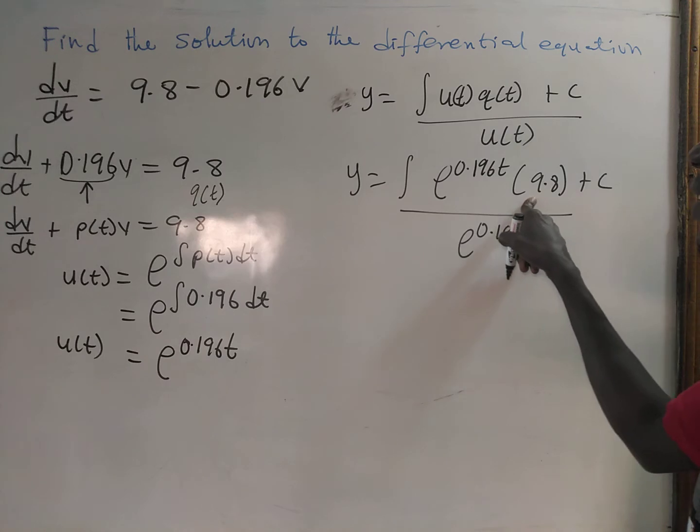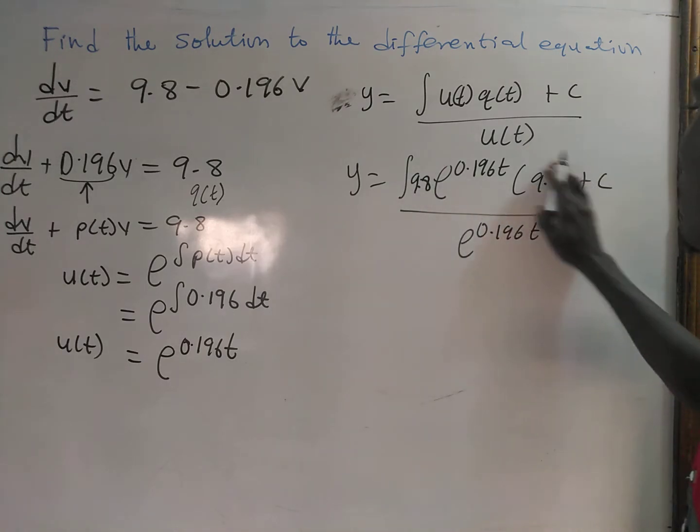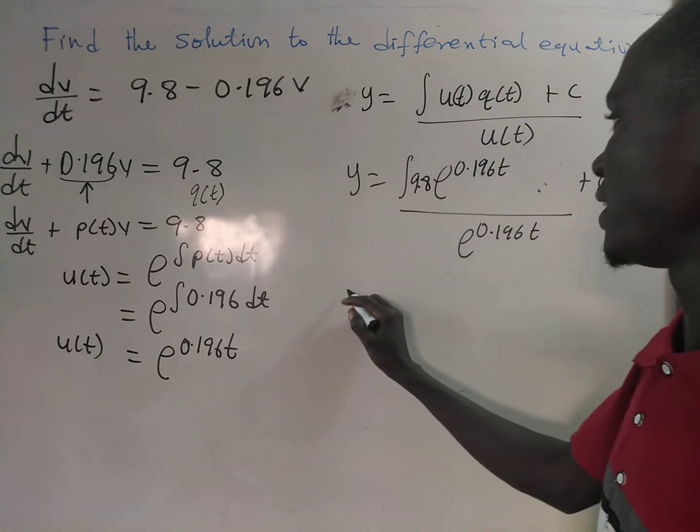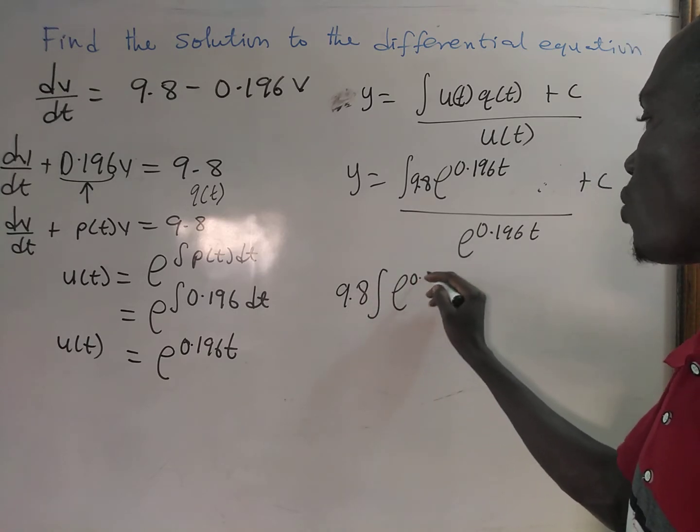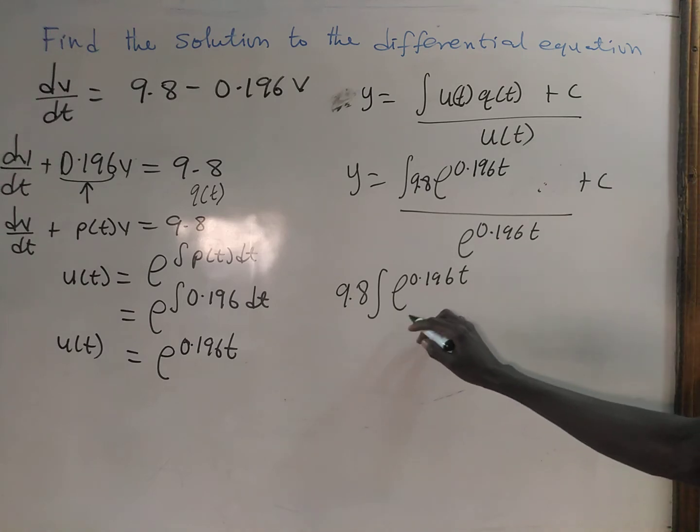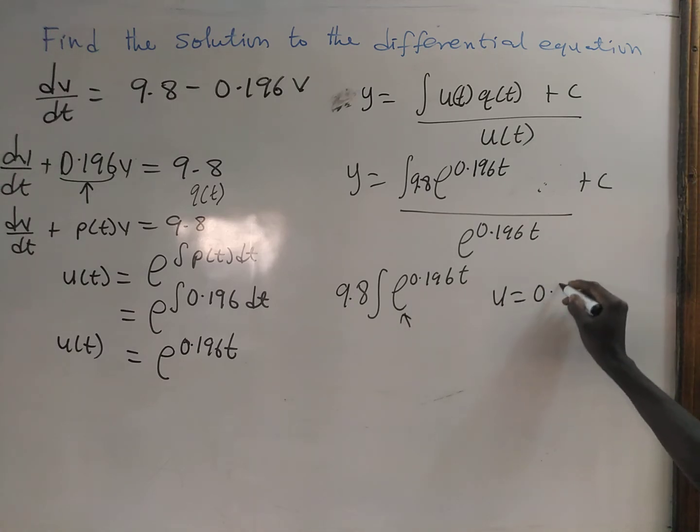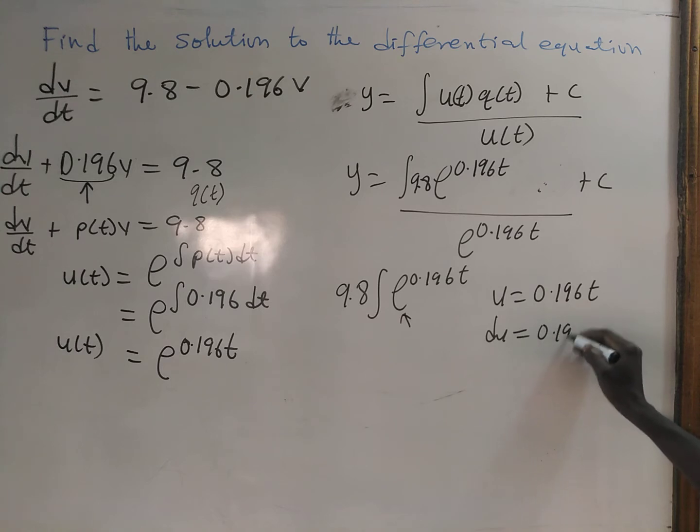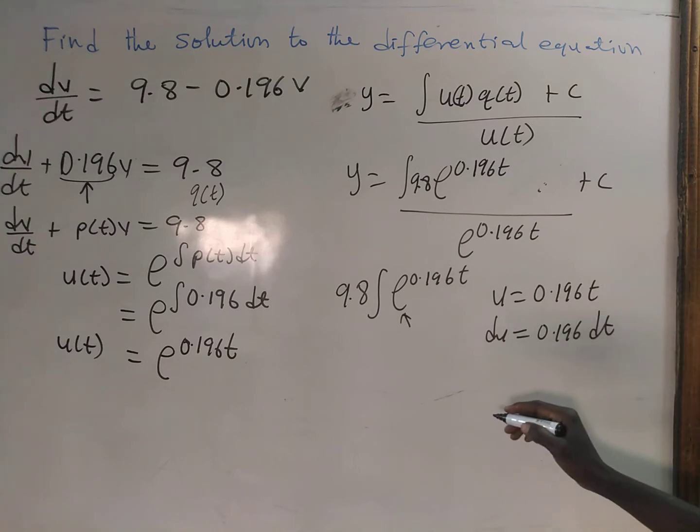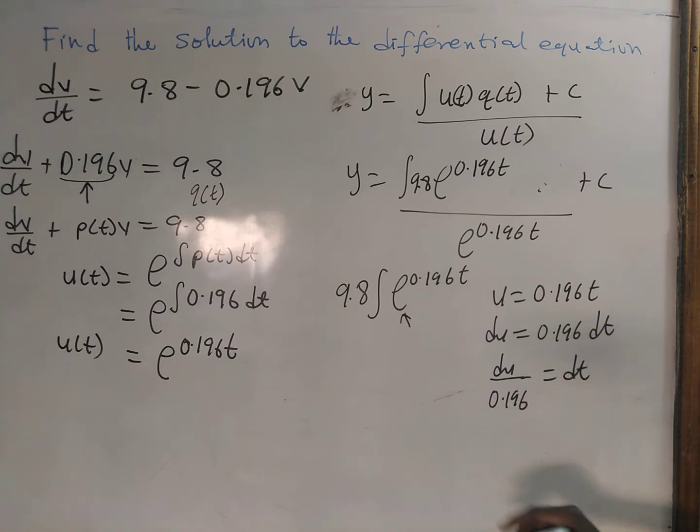So if we multiply this, you get 9.8 times e to the power 0.196t here. So let us integrate. For the integral, 9.8 times the integral e to the power 0.196t. If we let u equal 0.196t, then du equals 0.196 dt, and we have du divided by 0.196 equals dt.